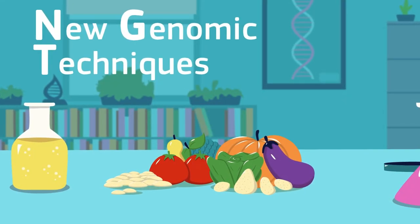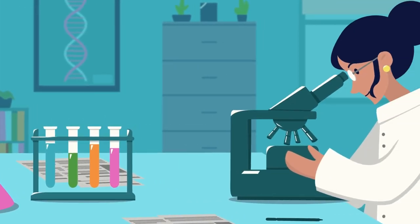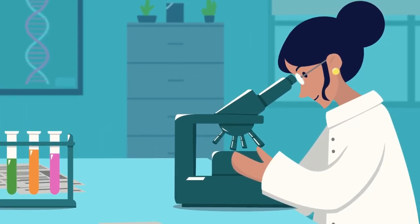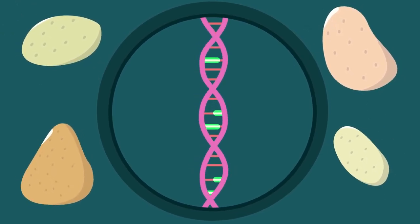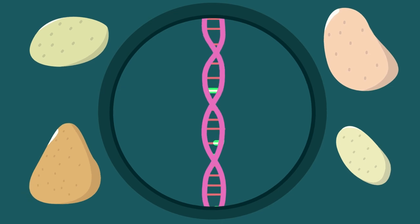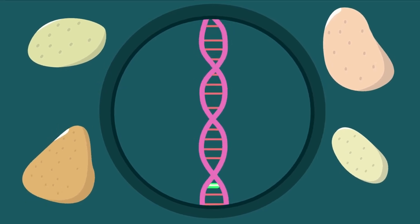New genomic techniques allow us to do the same, faster and with more precision. The techniques identify and select the right characteristics from the plant's own DNA or from a related plant, like a different variety of potato.